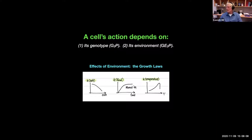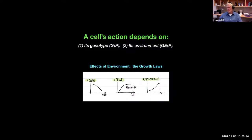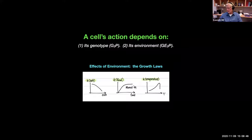The basic idea is that environment is at least as important as genotype. So we call it GE to P — genotype and environment to phenotype — because you take the very same cells, put them in a single beaker, you change the temperature, and you see the growth rate change. The phenotype, the behavior, how the cells act, depends on the environment even when they have the same genotype.